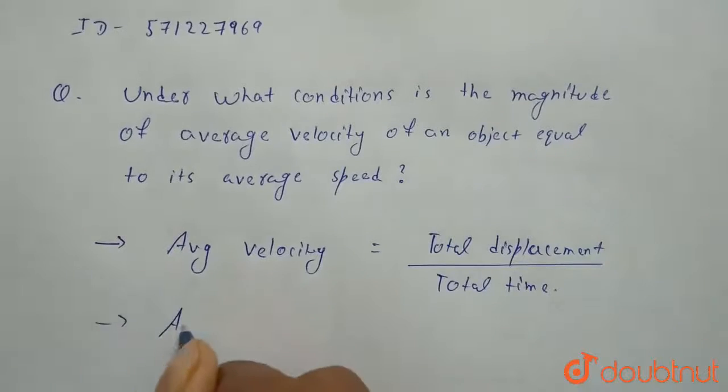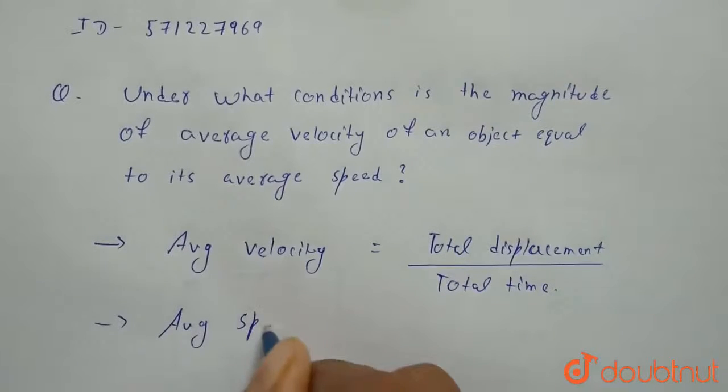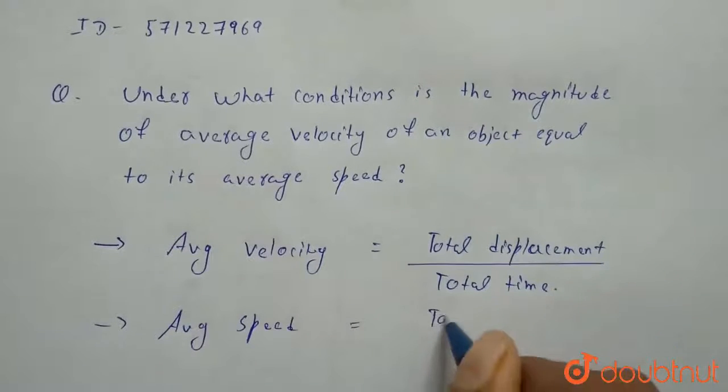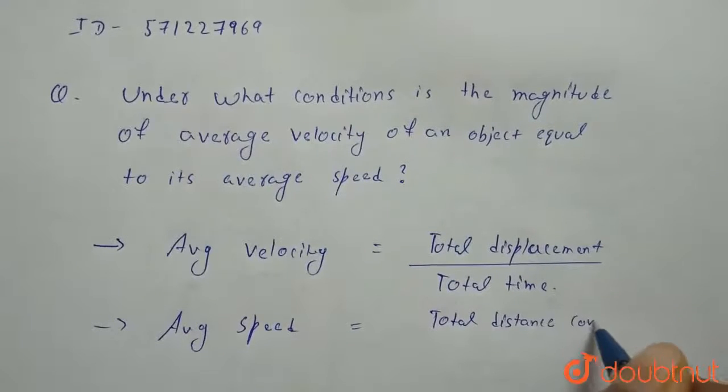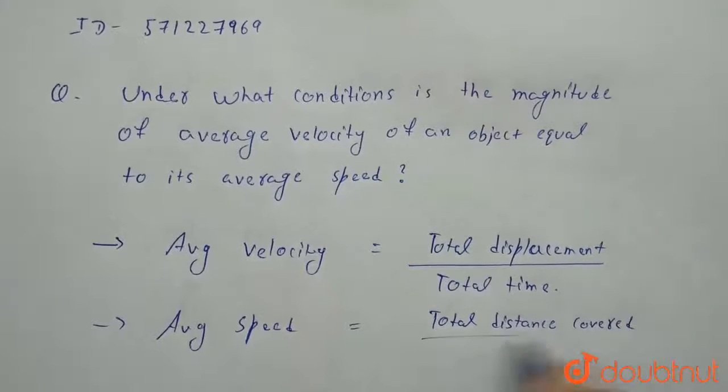And average speed is basically total distance covered upon total time.